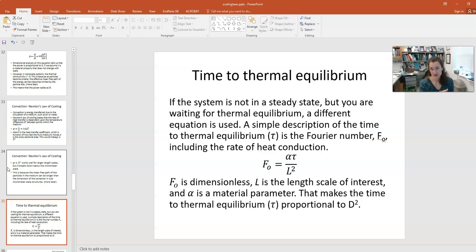So F₀ here is equal to α times τ over L squared, and the time to thermal equilibrium in this equation is given by τ. So F₀ is dimensionless. L is the length scale of interest, which would, in this case, be our characteristic dimension D. And α is a material parameter, again, something that we don't consider within our dimensional analysis. So if you solve for τ, τ would be L² F₀ over α, and since F₀ and α have no length dependence there, then that means that the time to thermal equilibrium is proportional to D squared. Now, this makes sense. If you have a larger particle, it's going to take longer for it to come to thermal equilibrium than a smaller particle.